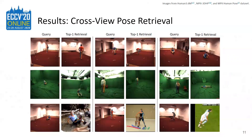Here are the qualitative retrieval results, with the query on the left and the retrieved pose on the right. Our embedding does not depend on a particular 2D keypoint detector, and does not require any additional information such as camera parameters during inference. We show in-the-wild performance on row 3.